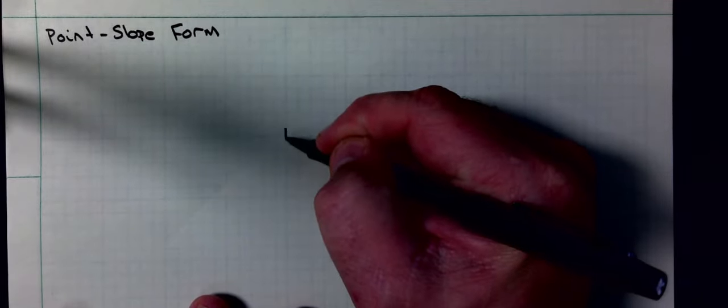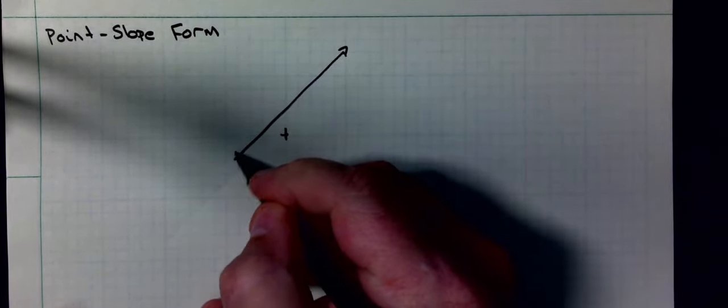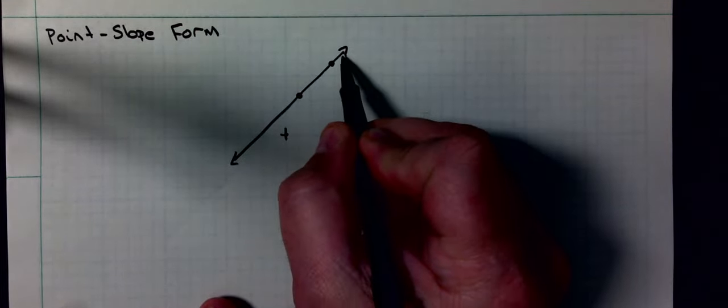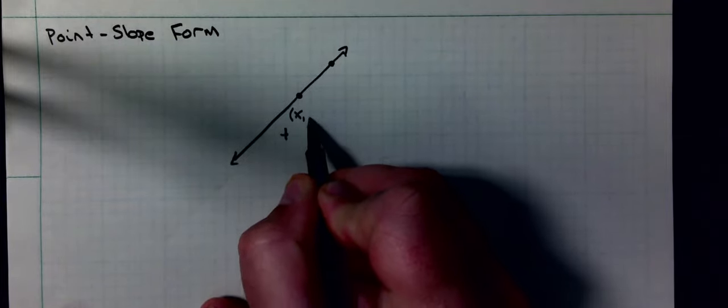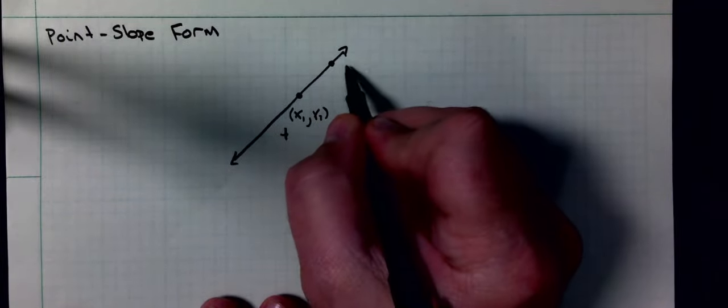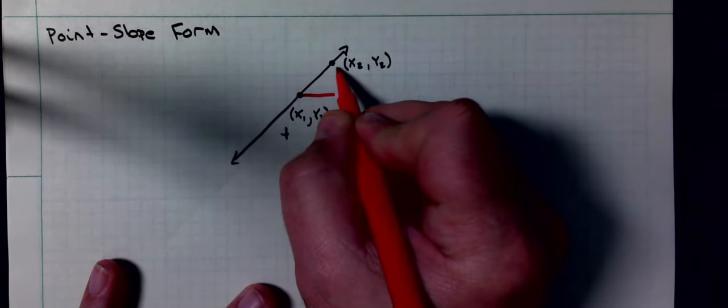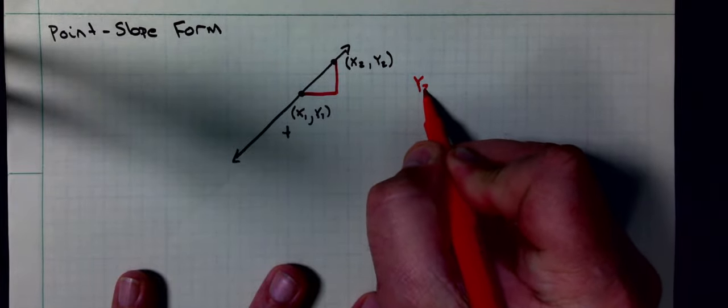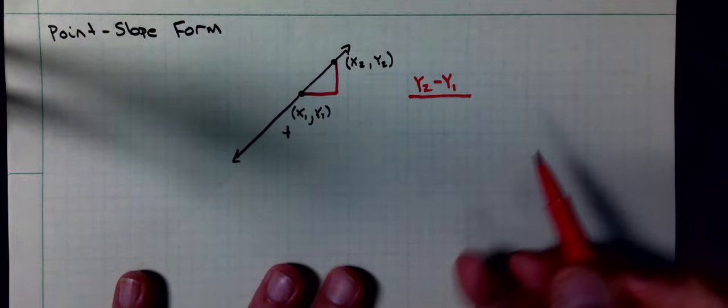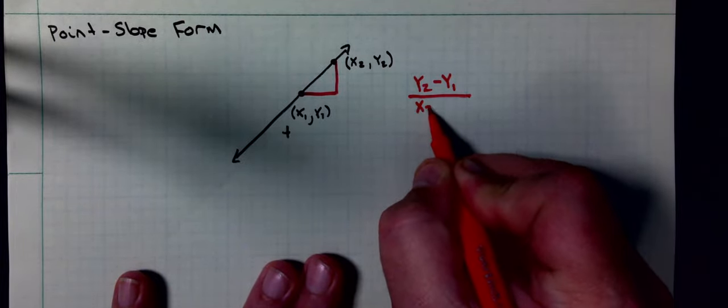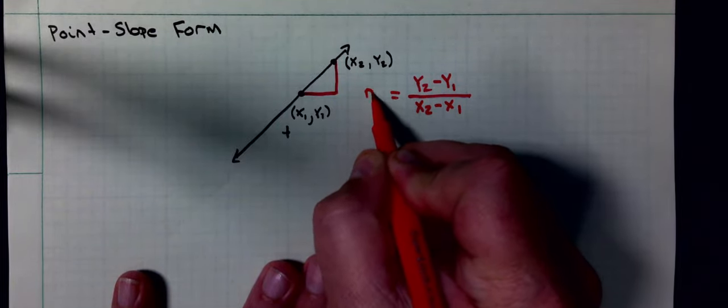If I have the graph of a line, I can take any two points. I'm going to call the coordinates of the first point x-sub-1, y-sub-1 — the first x-coordinate and first y-coordinate. The second point gets a second x-coordinate and y-coordinate. Just like in the last lesson, I can calculate the slope. If it's not on a graph, the way you calculate the change in y is the second y value minus the first y. The change in x is the second x value minus the first x. That is how we calculate the slope.